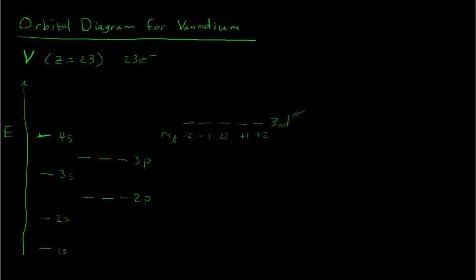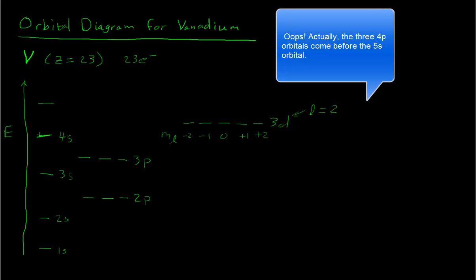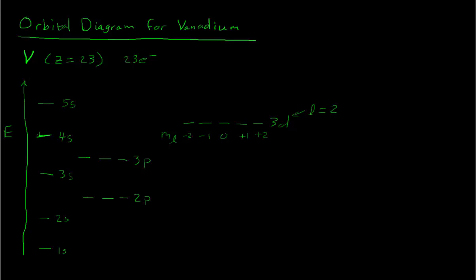Remember that when we're talking about d type orbitals, the l quantum number is equal to 2. So m sub l can take any value on from minus 2 up to plus 2. So it turns out that this is as high as we need to go. But after the 3d would come the 5s. So we could draw 5s up here. But that one's not going to be occupied for vanadium. So we'll run out of electrons before we run out of boxes on this diagram for vanadium.